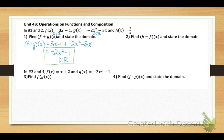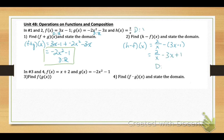Number 2: subtract the functions, h minus f of x. Our h function is 2 over x, and we subtract our f function, which is 3x minus 1. Put that in parentheses and distribute the negative, so it becomes 2 over x minus 3x plus 1. Notice we have a variable x in the denominator, so we need the domain restriction that x cannot equal 0, because dividing by 0 is undefined.